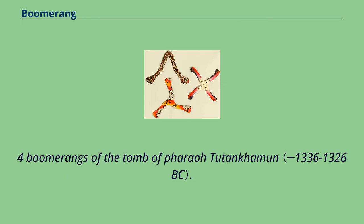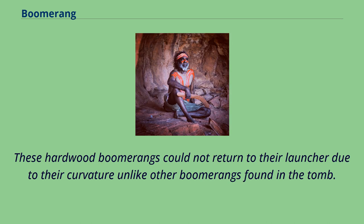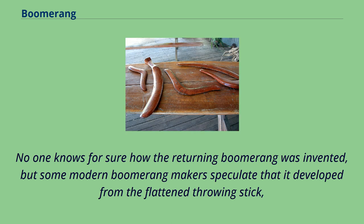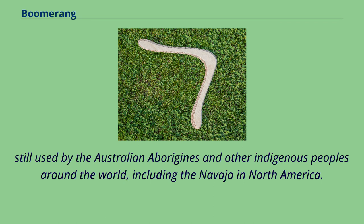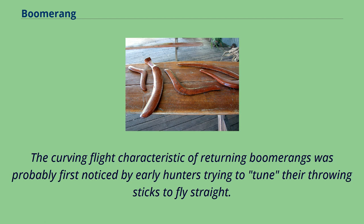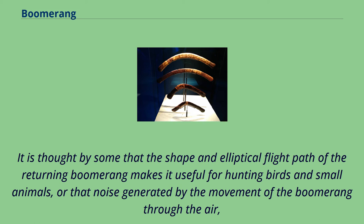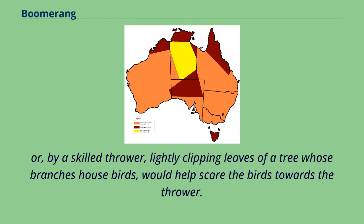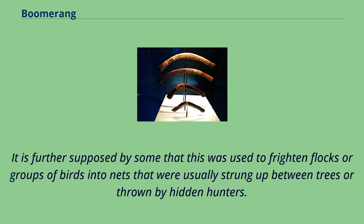Tutankhamen's hardwood boomerangs could not return to their launcher due to their curvature, unlike other boomerangs found in the tomb. No one knows for sure how the returning boomerang was invented, but some modern boomerang makers speculate that it developed from the flattened throwing stick, still used by Australian Aborigines and other indigenous peoples including the Navajo in North America. The curving flight characteristic of returning boomerangs was probably first noticed by early hunters trying to tune their throwing sticks to fly straight. It is thought that the shape and elliptical flight path makes it useful for hunting birds and small animals, or that noise generated by the boomerang moving through the air, or lightly clipping tree branches, would help scare birds towards the thrower.